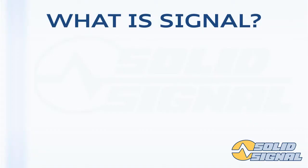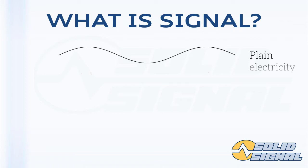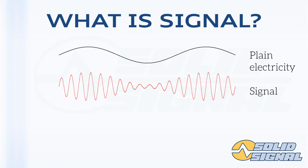Signal is different from plain old electricity. Electricity used for power is as smooth as possible with irregular spikes — we call these surges. Electricity used for signal has very regular patterns built into it. The process of applying a pattern to that electricity to turn it into a signal is called modulation.